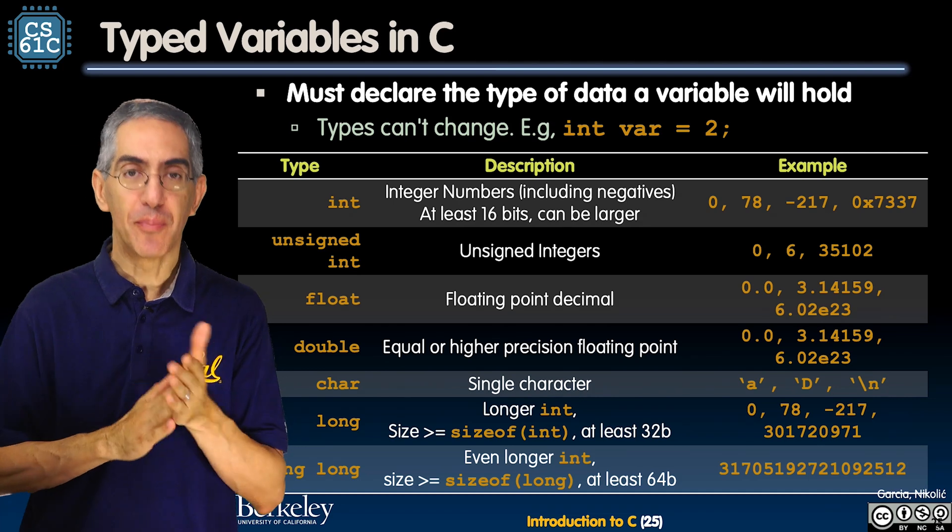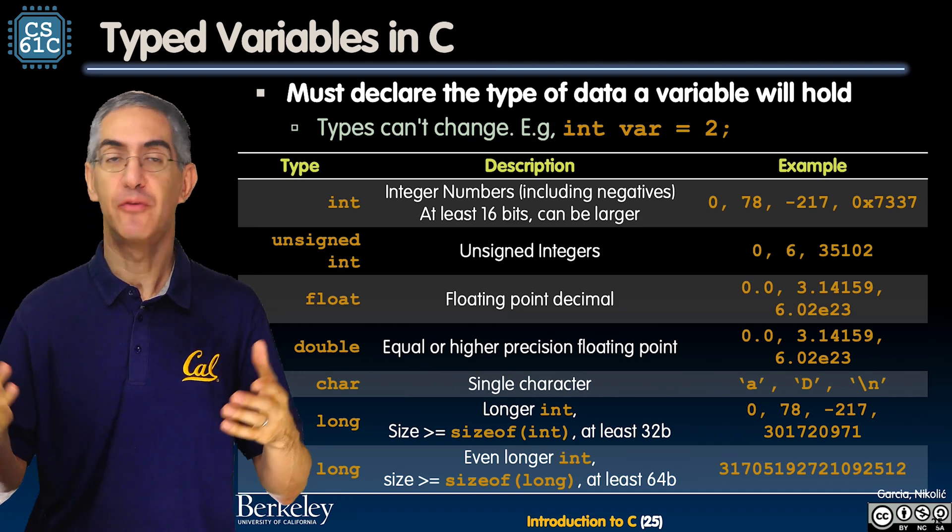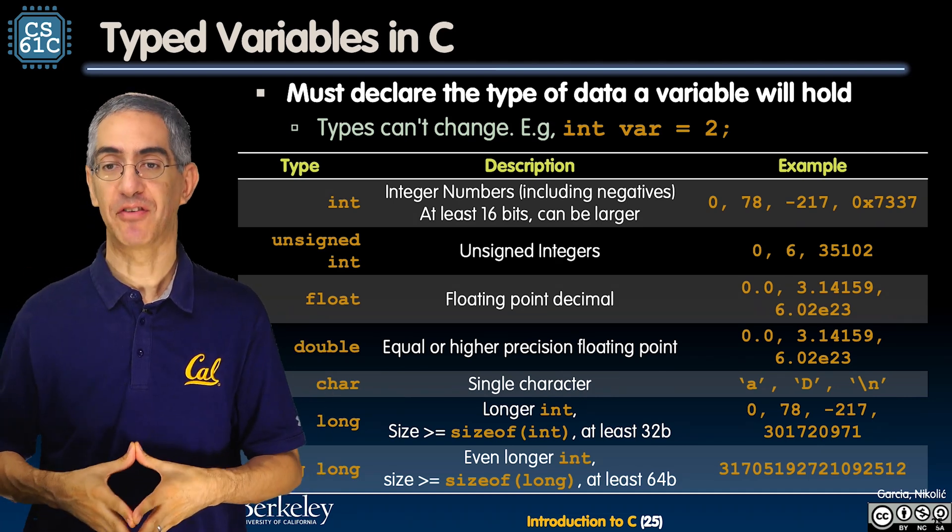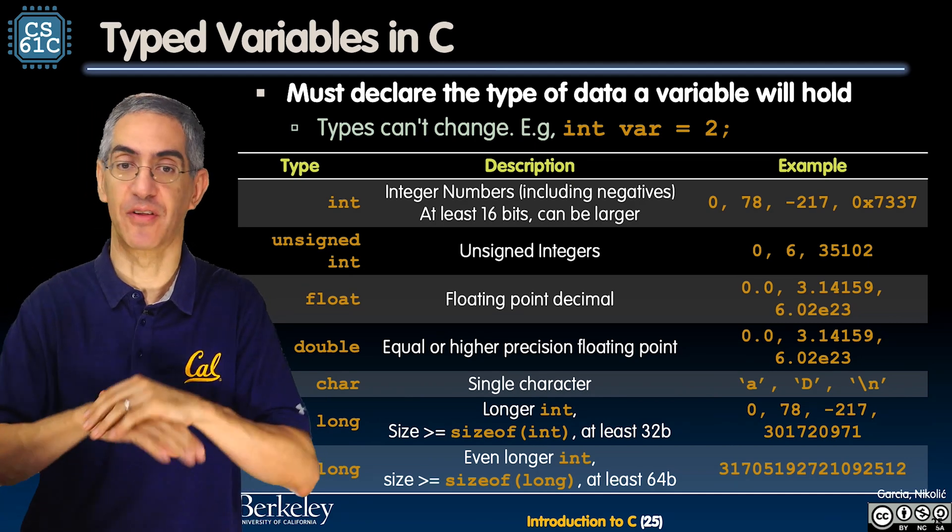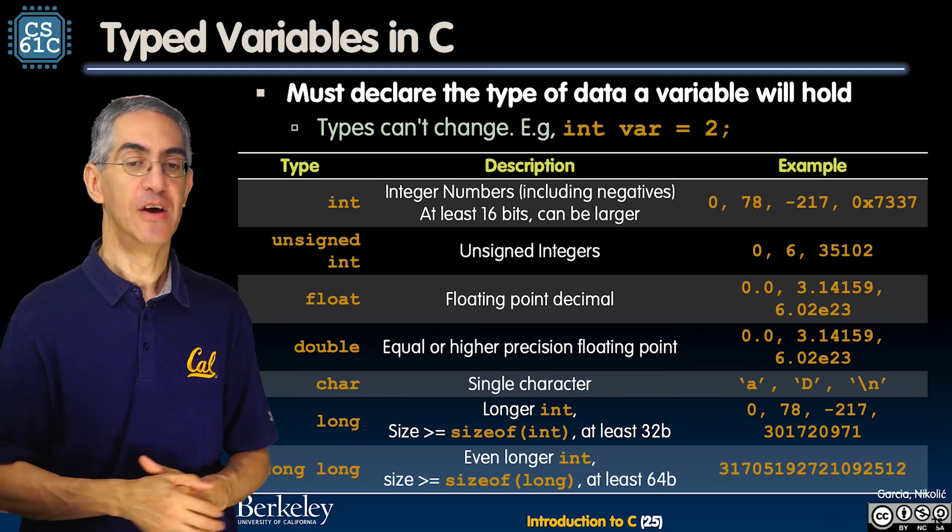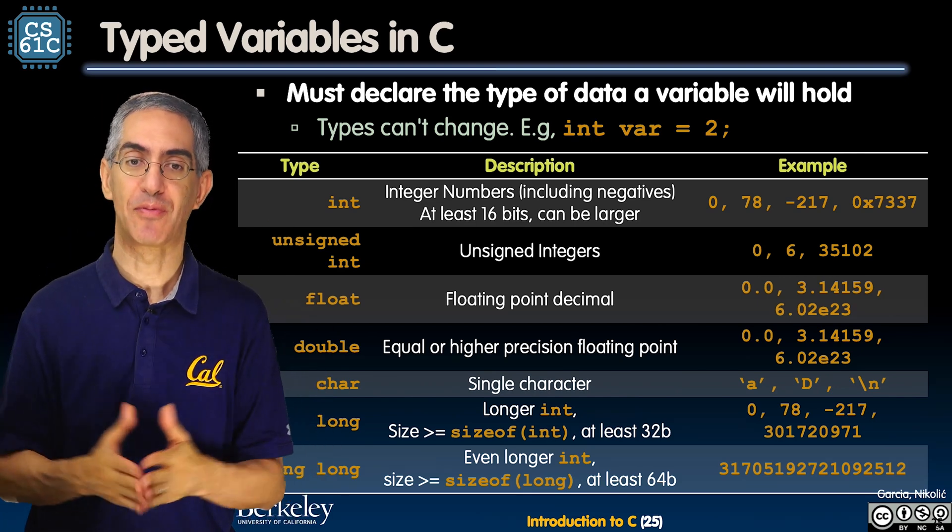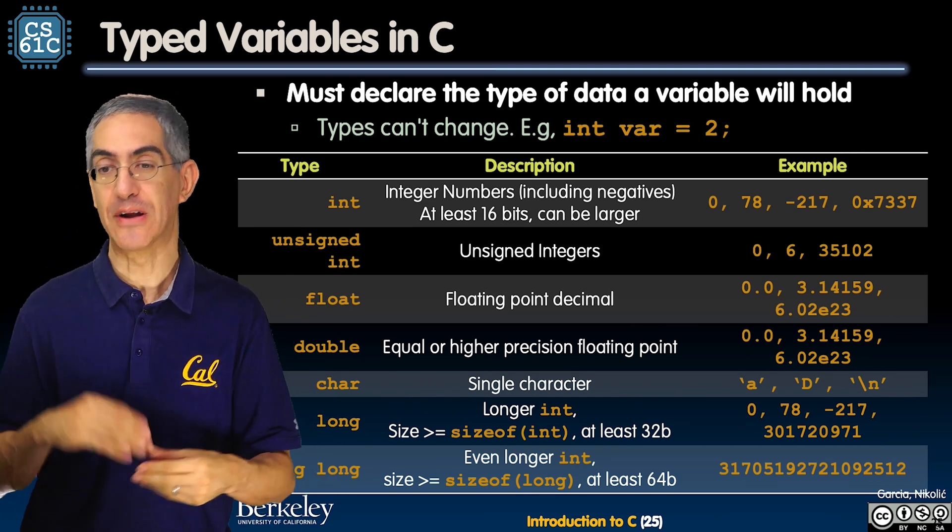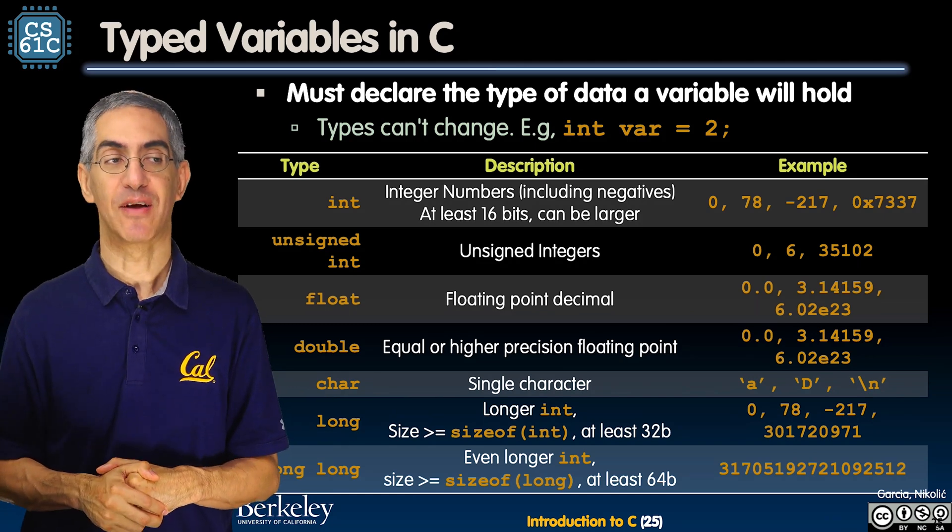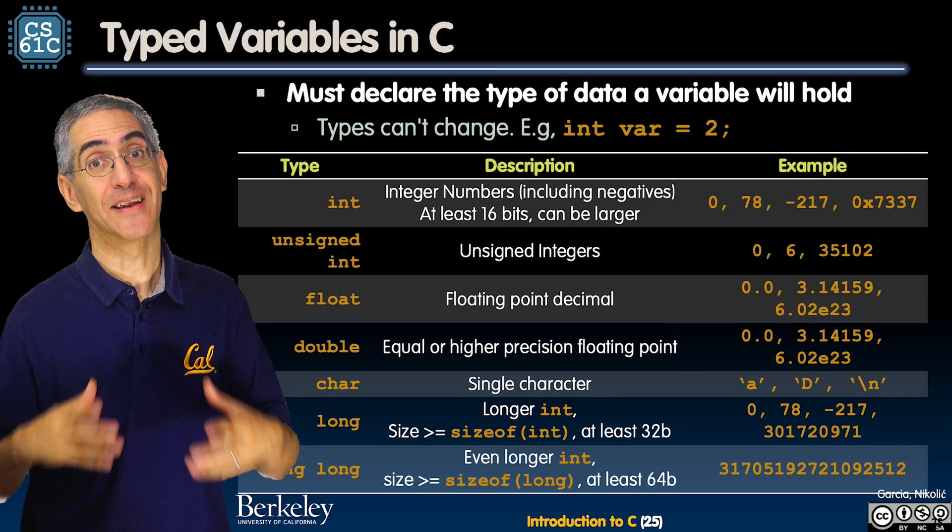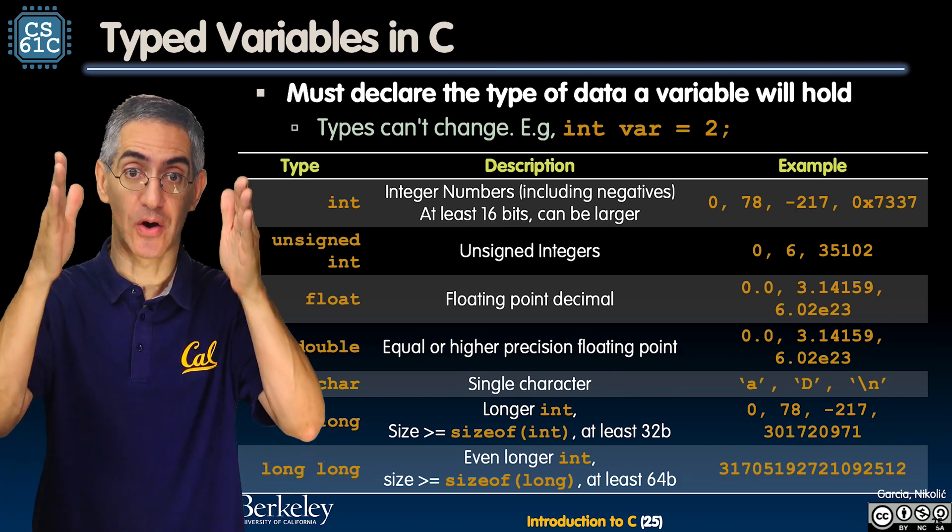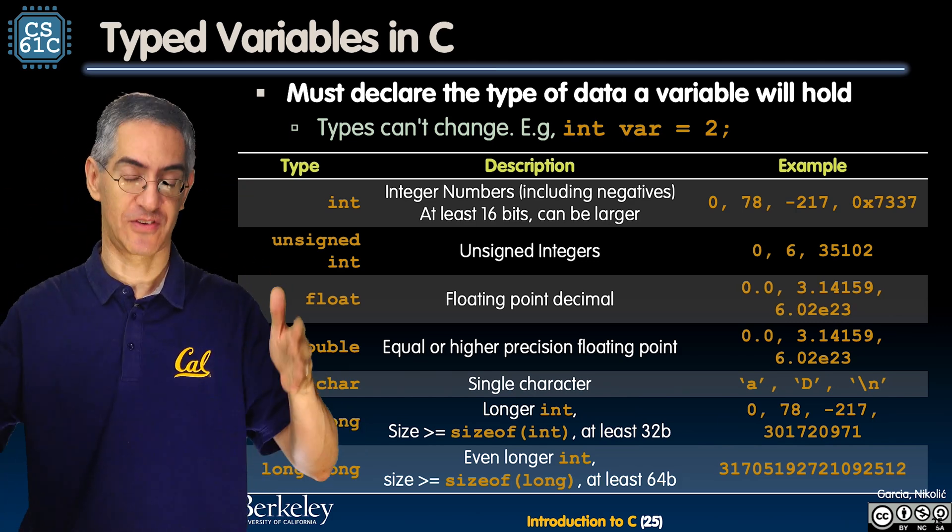So in terms of variables you've got to have types. You know from Java you have types. You have to declare what type of variable is before you use it and you can't change it. It's locked in for the life of the program. Types can't change. So here's an example of some of the common types people are using. You saw ints for integer numbers and negative numbers as well.